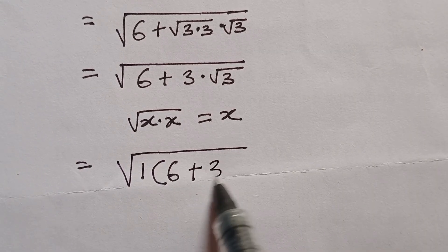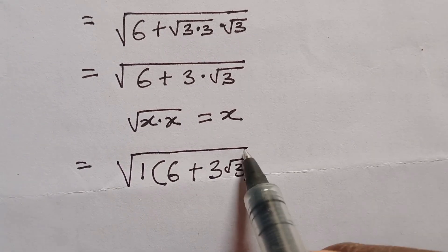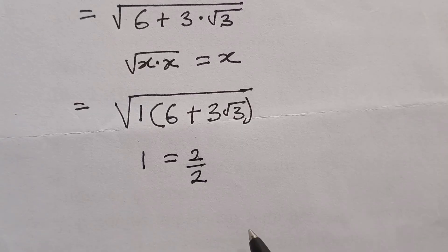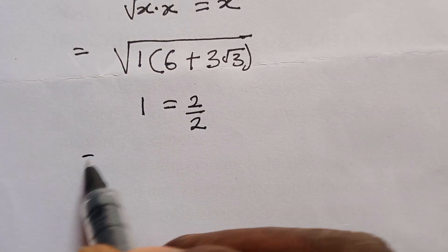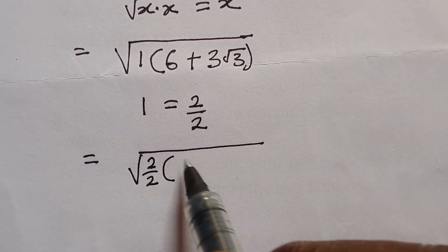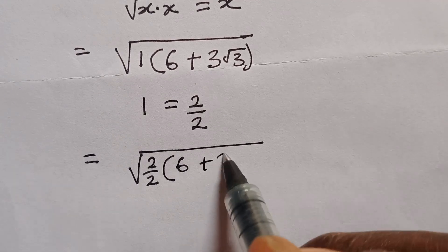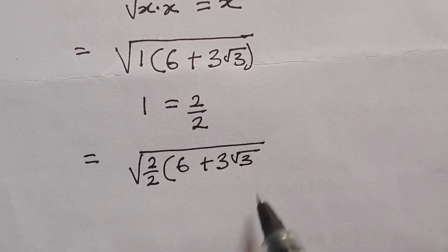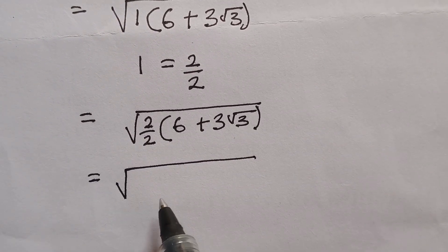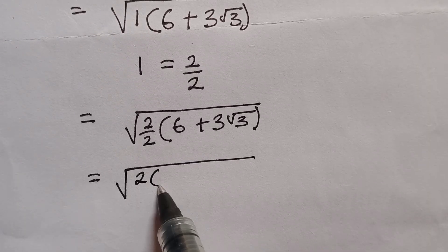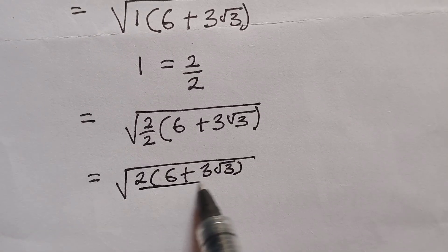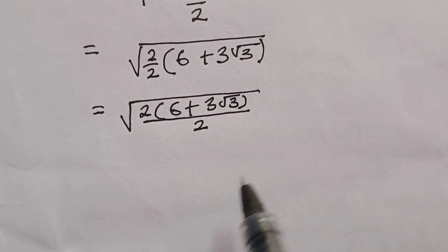I want to apply the constant 1, which equals 2 divided by 2, into my expression to make it easier to solve. Any number multiplied by 1 gives that same number. Therefore I have square root of 2 divided by 2, into my bracket 6 plus 3 square root of 3. I will use the 2 to open the numerator, giving me 2 times 6 equals 12, and 2 times 3 square root of 3 equals 2 times 3 square root of 3.